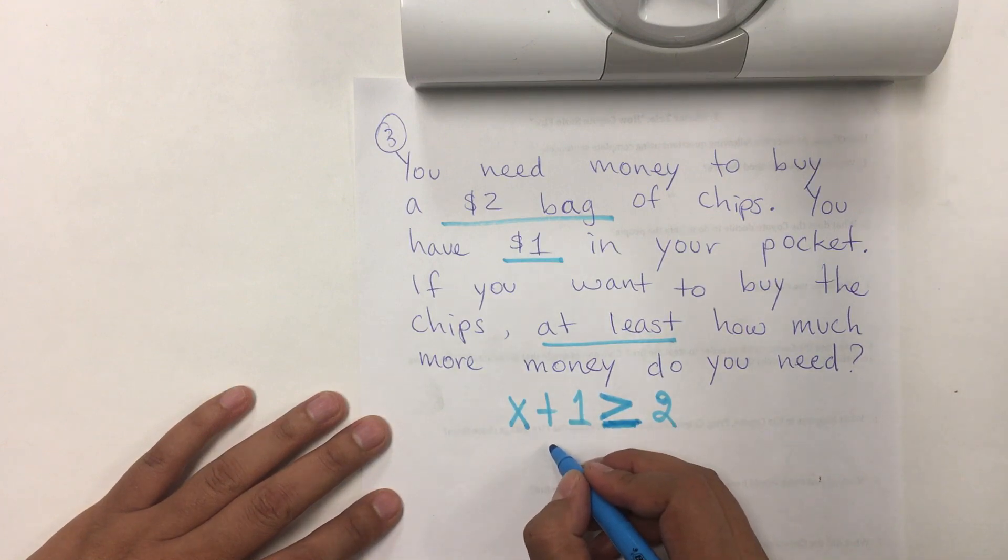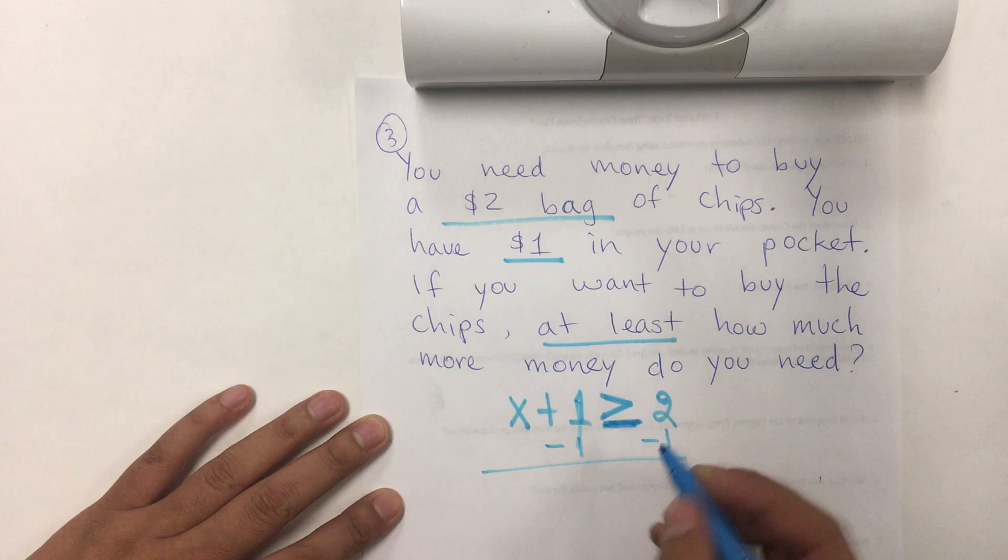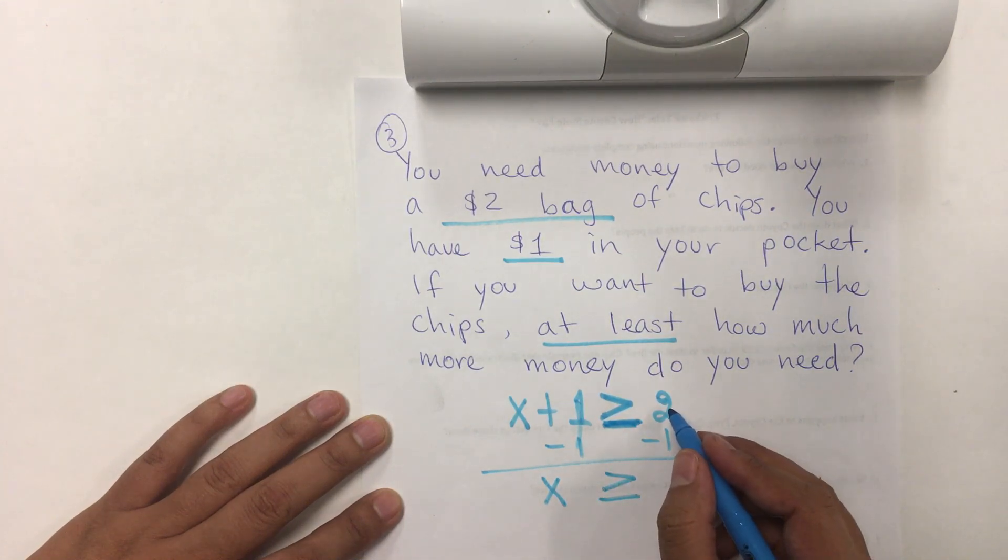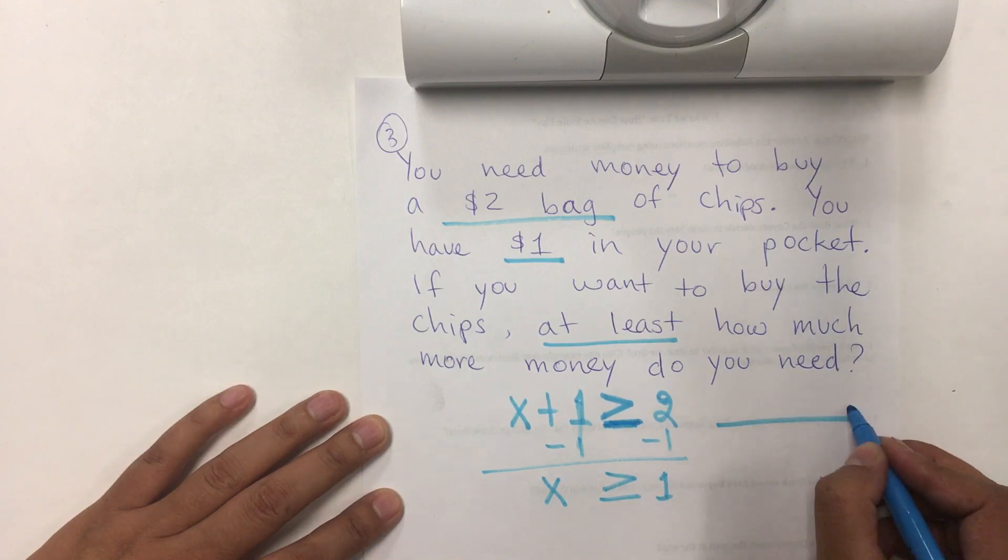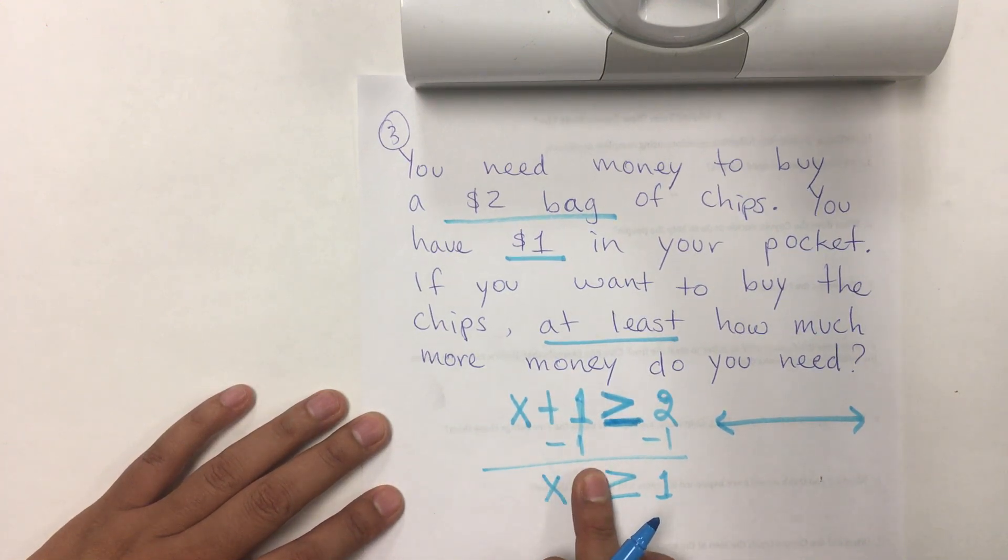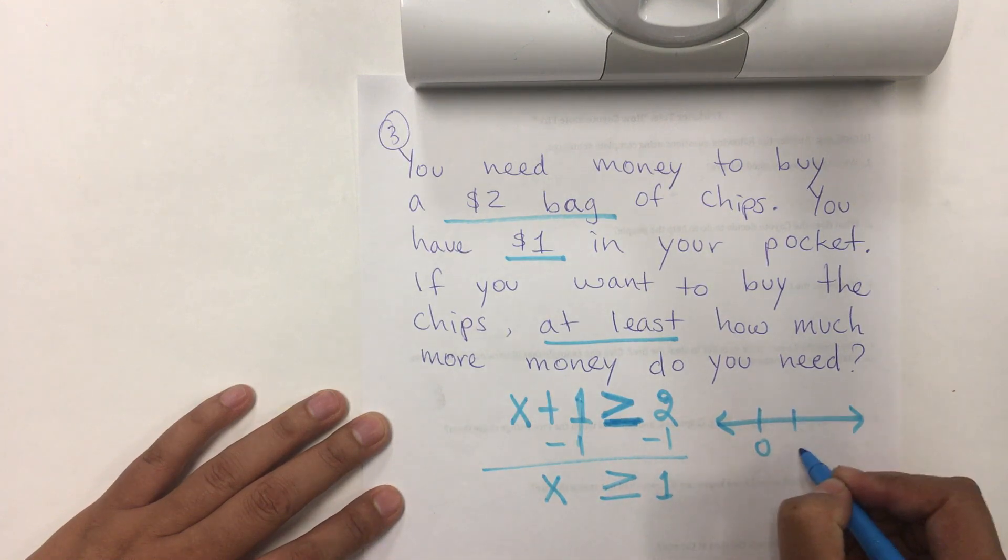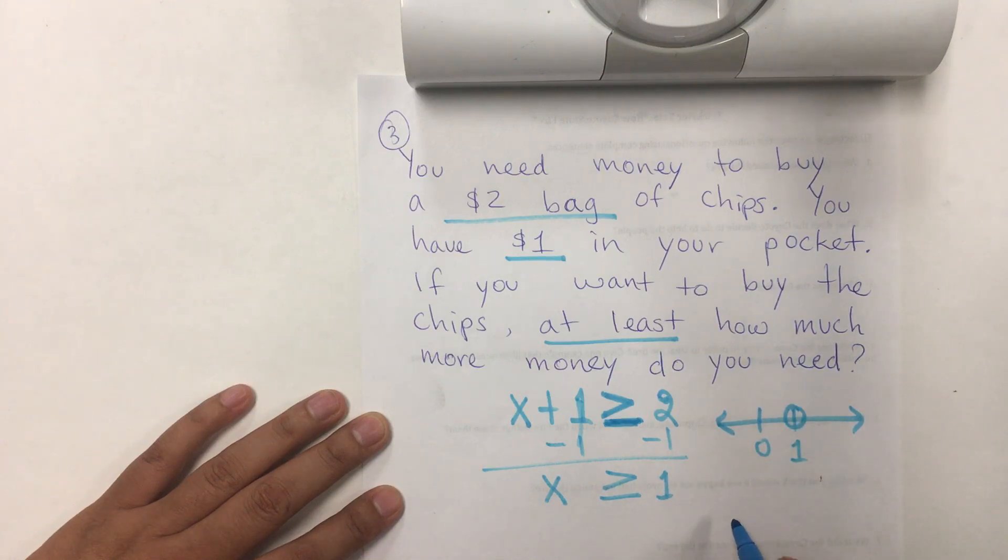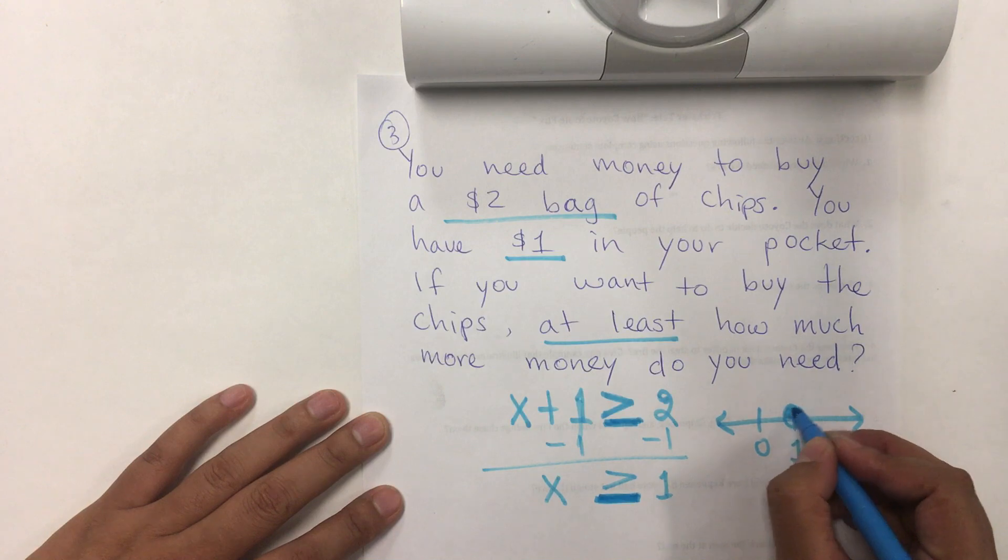So I start solving by subtracting. And so, X is greater or equal than 2 minus 1, which is 1. That means that the money that I need, remember that's represented by the X, is more or equal to 1. So, $0, $1, I put the circle in here. Because I have this right here, I close the circle.